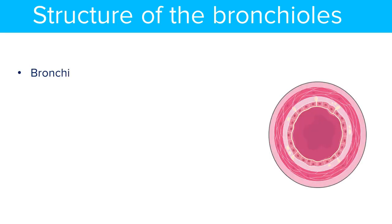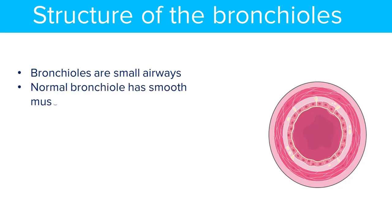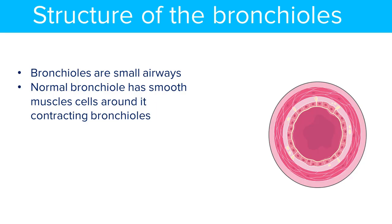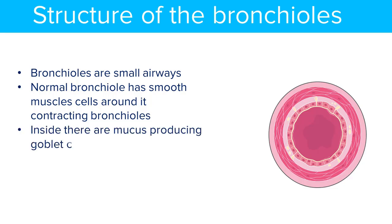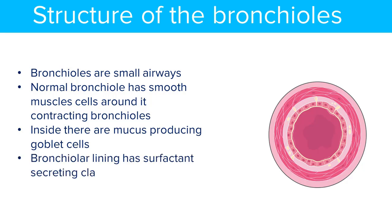The bronchioles are small airways, usually with less than 2 mm of diameter, and the normal bronchi has smooth muscle cells around it. These muscle cells help in contraction and relaxation of the bronchioles. Inside the bronchioles there are mucus-producing cells known as goblet cells, and in the bronchiole lining we have surfactant-secreting Clara cells.